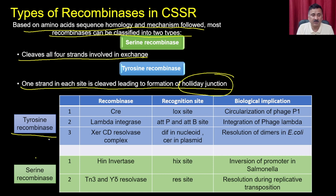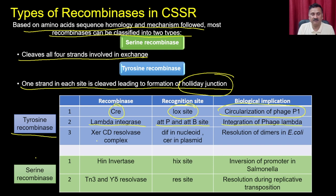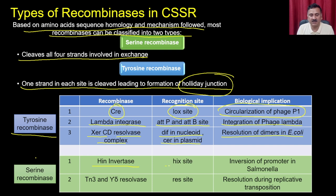Examples of tyrosine recombinases: Cre recombinase uses loxP sites for circularization of phage P1; lambda integrase uses attP and attB sites for integration of phage lambda; XerCD resolvase complex acts at dif sites for resolution of dimers in E. coli. For serine recombinases: Hin invertase uses hix sites for inversion of the promoter in Salmonella; Tn3 resolvase uses res sites for resolution during replicative transposition.